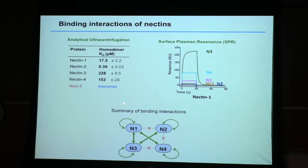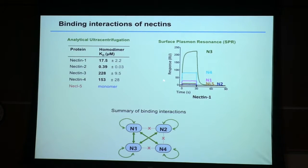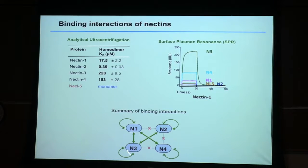You can see that nectin-1 binds to itself more strongly than nectin-3 binds to itself. But when you do an experiment with a Biacore apparatus — where you flow nectin-3 or other nectins on a chip containing nectin-1 — you see that nectin-3 binds to nectin-1 more strongly than nectin-1 binds to itself. So these proteins are primarily heterophilic binding proteins. They're also homophilic. When you do all the measurements, you get a binding matrix: n1 to n3, n4, etc.